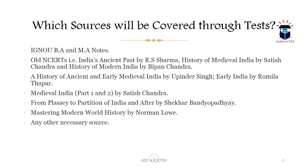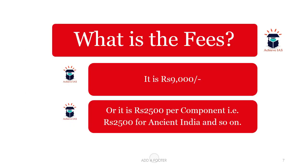The sources that will be covered include: BA and MA notes, old NCERTs, India's Ancient Past by R.S. Sharma, History of Medieval India by Satish Chandra, History of Modern India by Bipin Chandra, History of Ancient and Early Medieval India by Upinder Singh, Early India by Romila Thapar, Medieval India Parts 1 and 2 by Satish Chandra, Modern India by Sekhar Bandyopadhyay, and Mastering Modern World History by Norman Lowe, along with any other necessary sources.